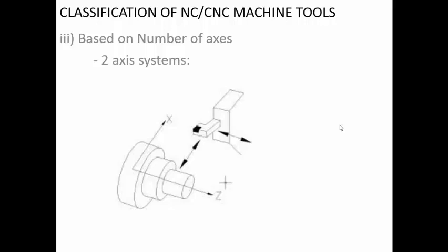The next classification is based on the number of axes. The axes in a CNC represent the directions in which there can be relative motion between the tool and the workpiece. If a CNC machine is a two-axis system, then there can be motions along two axes. Taking the example of a lathe, there are only two axes along which relative motion can occur.